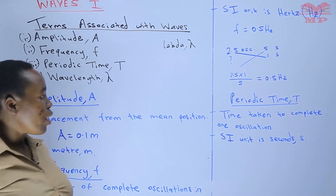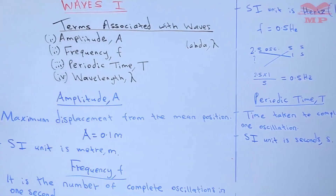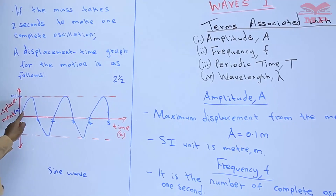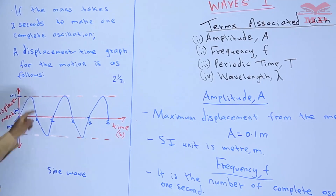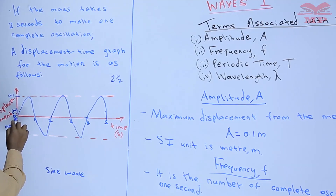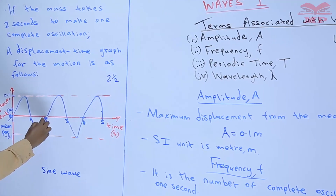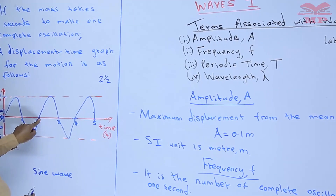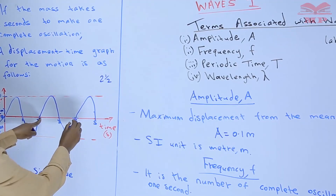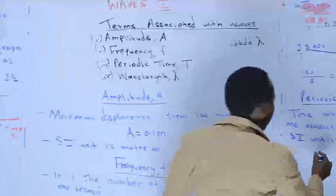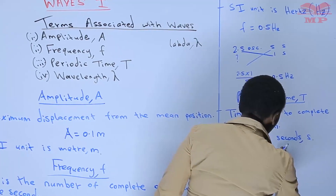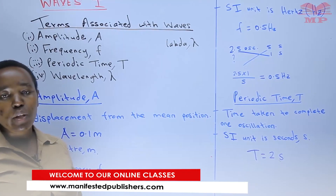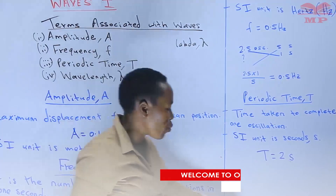Periodic time is the time taken to complete one oscillation. Looking at our wave, if we start from zero, one complete oscillation brings us to two seconds. We can also start from another point — for example, from second 2 to second 4, which is four minus two, giving two seconds. So our periodic time is two seconds. Time for one oscillation is what we call the periodic time.